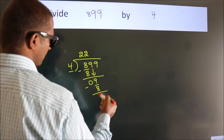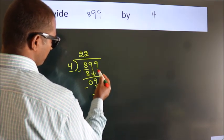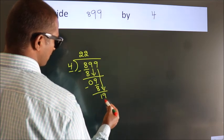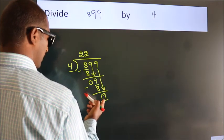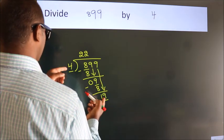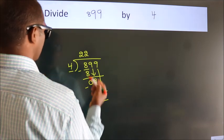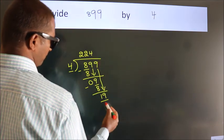After this, bring down the beside number. So, 9 down. So, 19. A number close to 19 in 4 table is 4 fours, 16.